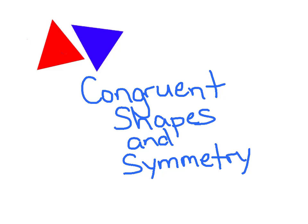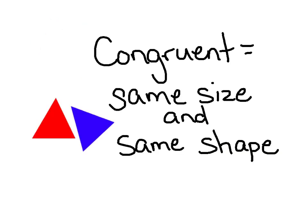Today's math lesson is all about congruent shapes and symmetry. A shape is congruent when it has the same size and same shape. These two triangles are congruent — they are the same size and the same shape. They are not in the same position, but even if they're not in the same position, as long as they have the same size and same shape, they are considered congruent.